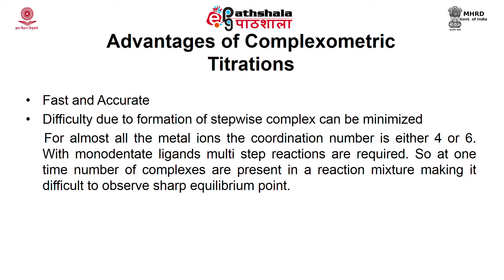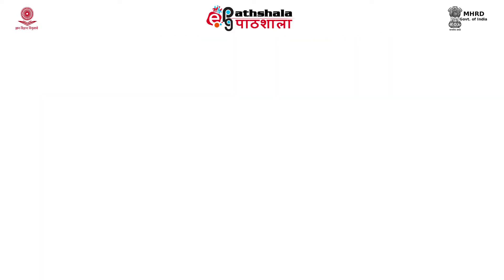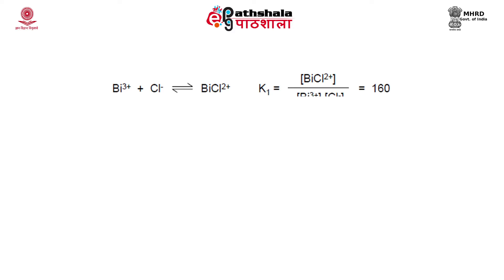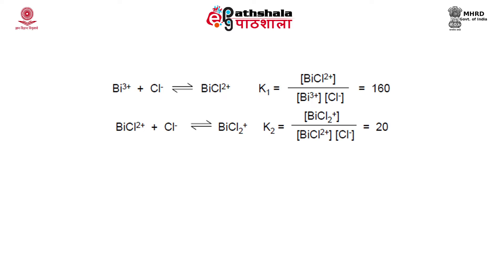For example, if we react 4 chloride molecules with bismuth, the stepwise reaction includes: bismuth plus chloride giving bismuth monochloride, where K1 is 160. Then bismuth monochloride plus chloride gives bismuth dichloride, and the equilibrium constant K2 for that reaction is 20.